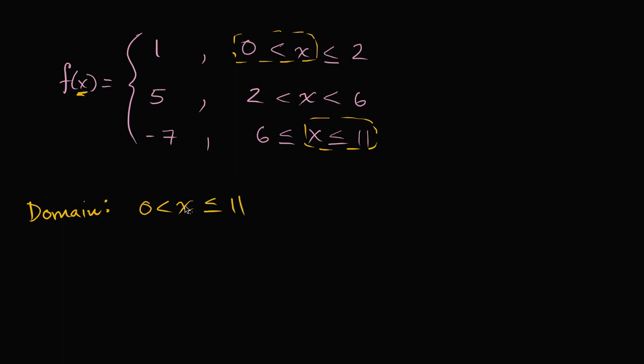It's defined for everything in between. As we, once again, as we get to two, we're here. As we cross two, between two and six, we're here. And at six, from six to 11, we're over here. So we're defined for all real numbers in this interval.